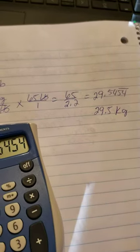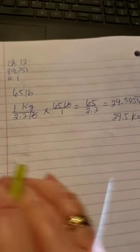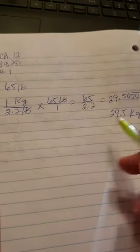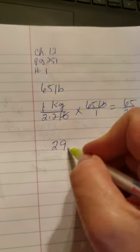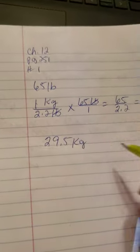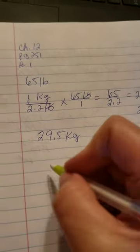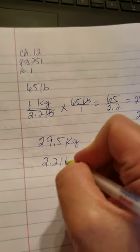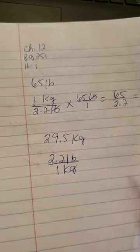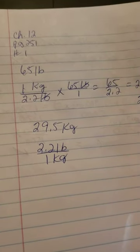Now if you're going to convert from kilograms to pounds, let's start with the same 29.5 kilograms and convert it to pounds. We know that 2.2 pounds are one kilogram. Now we're putting the pounds on top because we want to end up with pounds.